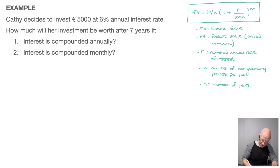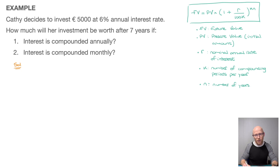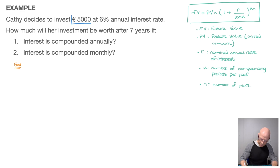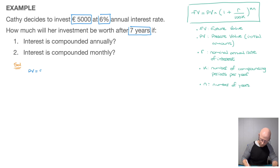For both questions, Kathy's initial investment is the same — 5,000 euros — and the annual interest rate is also the same at 6%, and the number of years is seven. So for both questions we can already note that PV equals 5,000, R equals 6, and N equals 7.